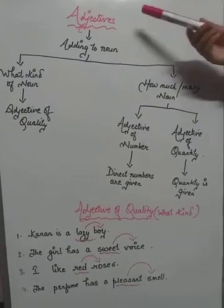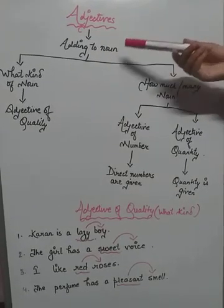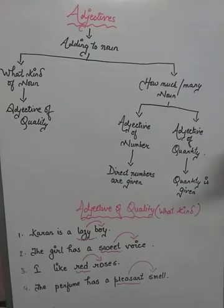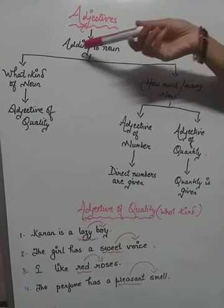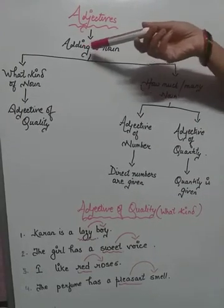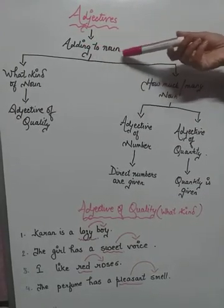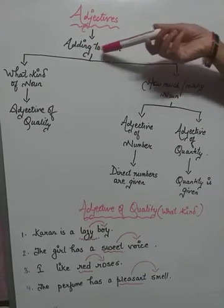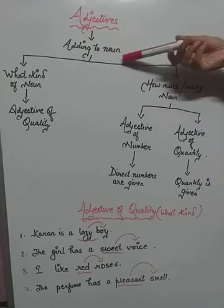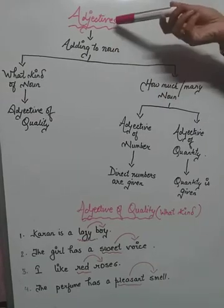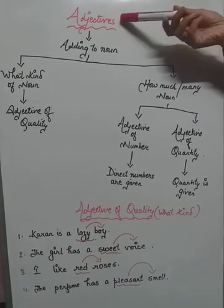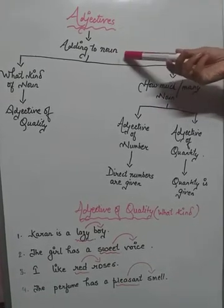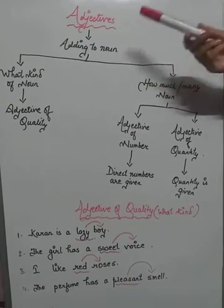So how is adjective related to noun? Adjective is adding to noun. It tells you more about noun. That is why when you do adjectives, you should know noun.